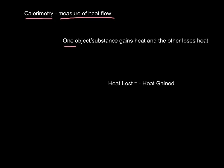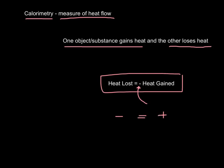The idea is that one object or substance gains heat and the other one loses heat. So the key to this whole section is that heat lost equals negative heat gained. We need the negative because heat lost is a negative quantity and heat gained is a positive quantity, so in order to make those two things true, you need a negative sign in there.